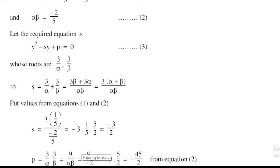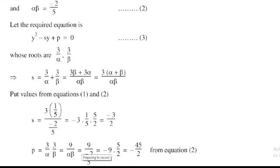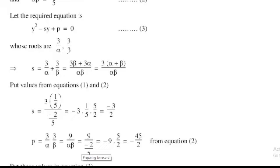Next, P is the product of the new roots: (3/alpha) × (3/beta) = 9/(alpha·beta). The value of alpha·beta is −2/5, so P = 9 ÷ (−2/5) = 9 × (−5/2) = −45/2. Therefore P = −45/2.